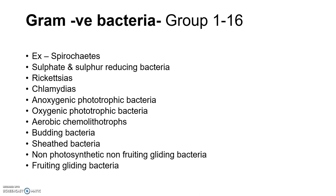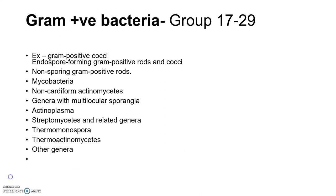Groups 1 to 16 represent gram-negative bacteria. The second division is mainly gram-positive bacteria, including spore-producing and non-spore types. Examples include gram-positive cocci and endospore-forming gram-positive rods and cocci.